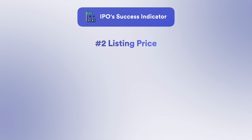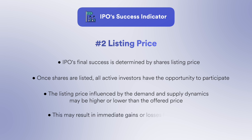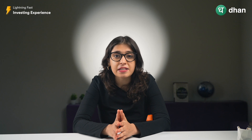The second indicator is the listing price. The IPO's final success is reflected in the listing price. When shares are finally listed on the stock exchange, all active investors can participate. The listing price of shares is determined by market demand and supply, and can be above or below the offer price, resulting in an immediate gain or loss for investors. Some investors invest in IPOs specifically to sell immediately after listing — this strategy is called flipping. In the flipping strategy, investors who are allotted shares try to sell immediately after listing.